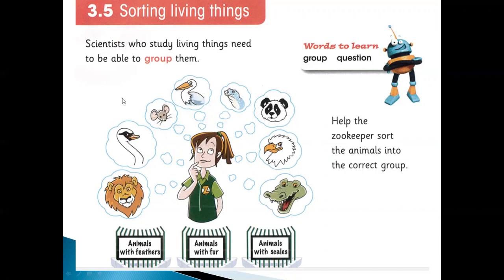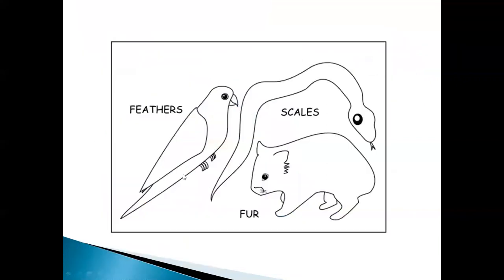You can cut pictures from the internet and paste them. Now you can clearly understand: feathers — like birds; scales — like snake and crocodile, their body is hard and stiff; and fur — like rabbit, horse, cow, and different mammals. So feathers, scales, and fur — we can make different groups of animals.